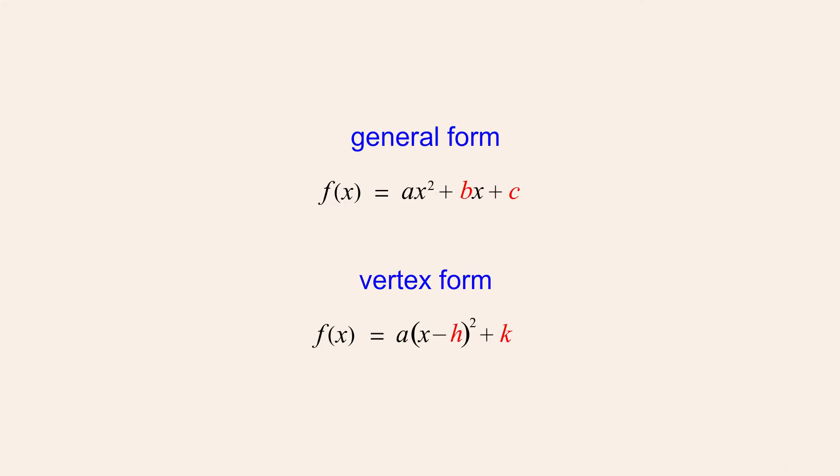To create a formula to convert vertex to general form, we will start with the vertex form and eliminate the parentheses by expanding (x minus h) squared, rewriting it as (x minus h) times (x minus h). Then, using the FOIL method, we multiply the two binomials.